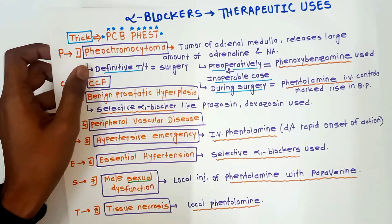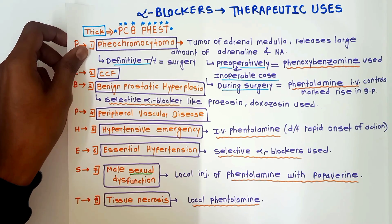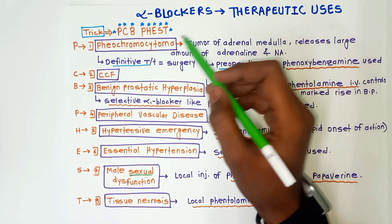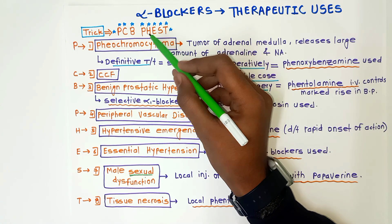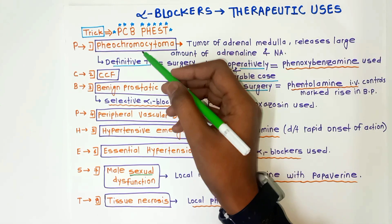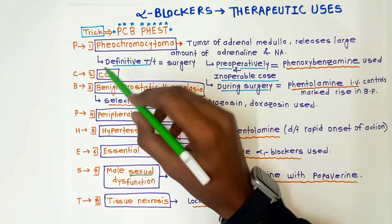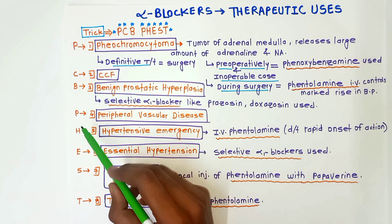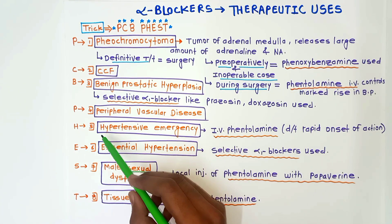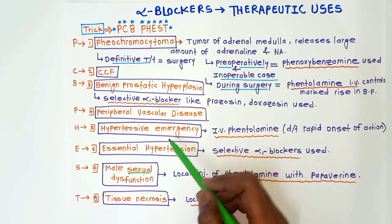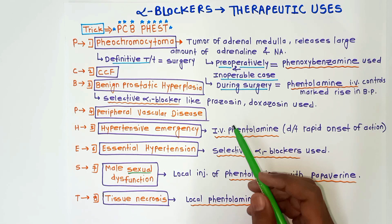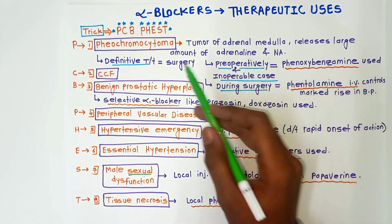Now we will move on to the therapeutic uses of alpha blockers. The trick to remember the therapeutic uses is PCB-PHEST: P for pheochromocytoma, C for congestive cardiac failure (CCF), B for benign prostatic hyperplasia, P for peripheral vascular disease, H for hypertensive emergency, E for essential hypertension, S for male sexual dysfunction, and T for tissue necrosis.